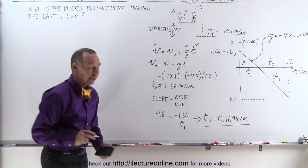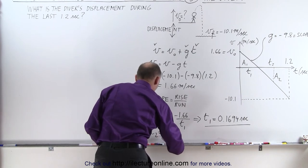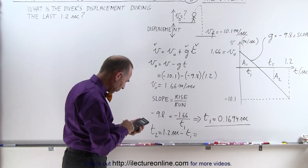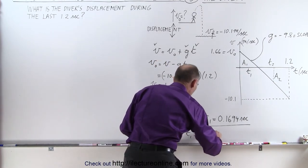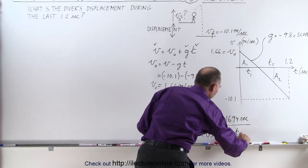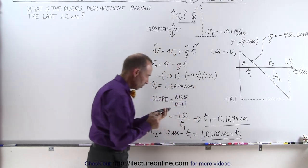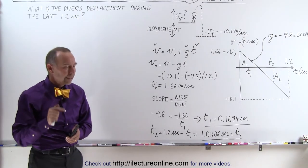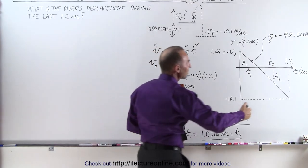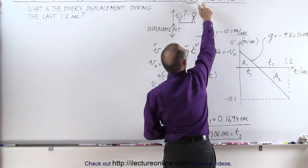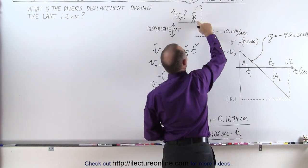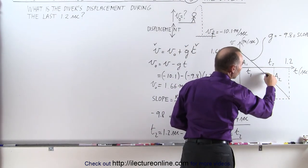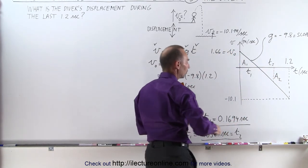Now t2 is simply equal to 1.2 seconds minus t1. Since t1 is 0.1694 seconds, t2 equals 1.2 minus 0.1694, which is 1.0306 seconds. So t1 is the time for the diver to reach maximum height, and t2 is the time for the diver to travel from maximum height all the way down into the pool. The displacement equals area a2 minus area a1 on the velocity-time graph.